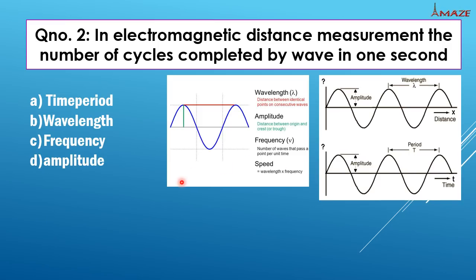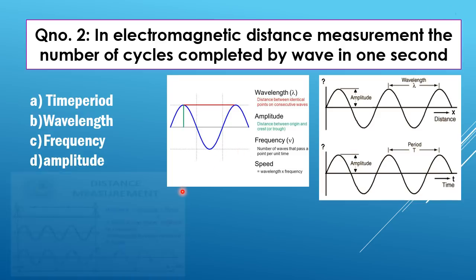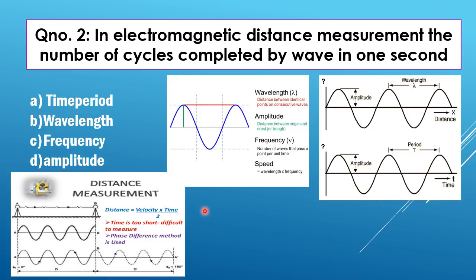Second question: In electromagnetic distance measurement, the number of cycles completed by a wave in one second is the frequency. The amplitude is the height of the wave. The number of waves that pass through per unit time is the frequency. In EDM and remote sensing, waves are mainly used. We measure distance by propagating waves and noting the speed and timing. The formula is: distance = velocity × time / 2.